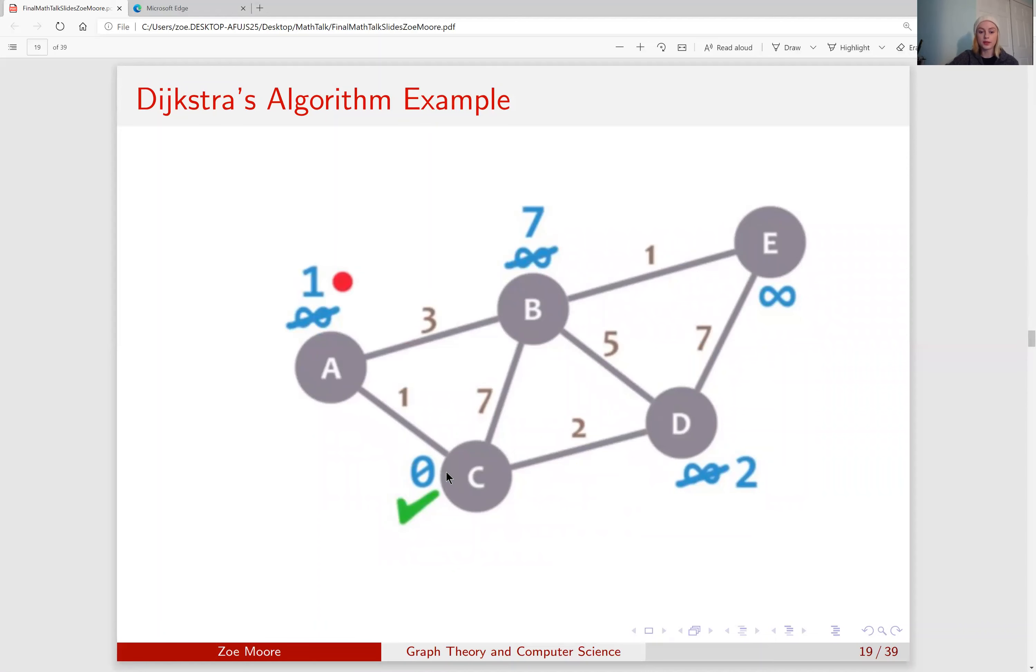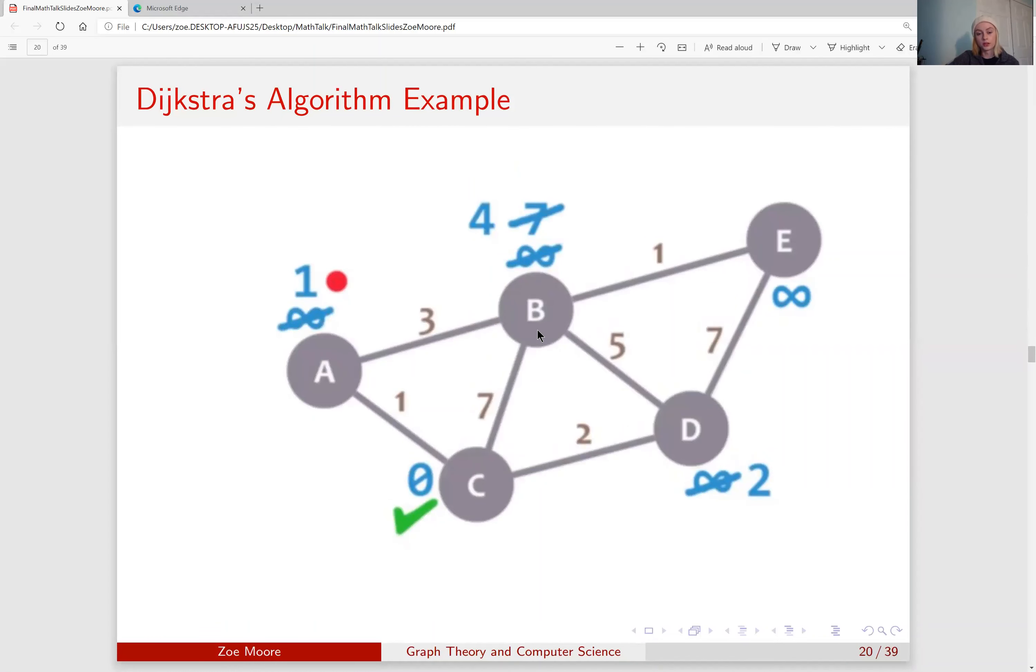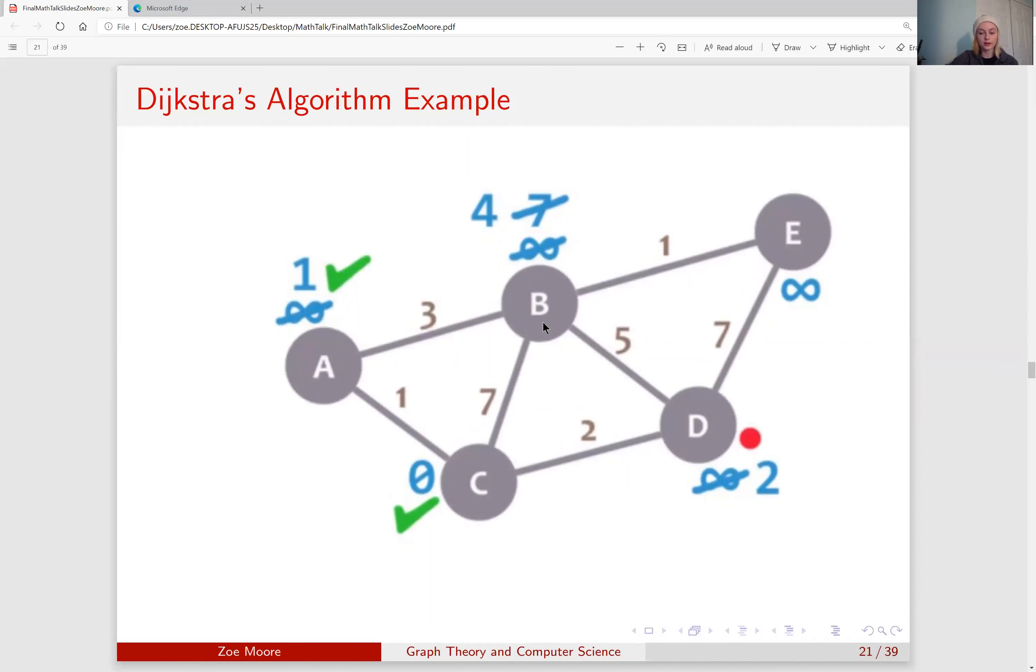Looking now at A, we've gone from A to C and C is complete and checked off, so the only option we have is to look at A to B. Now B currently has a label of 7, but we want to check it anyway. A to B has a weight of 3, and A already has a weight of 1, so moving from A to B gives B a new weight of 4. 4 is less than 7, so we change the label on B because 4 is smaller, and with this changed we are now done with A and we move on to D because 2 as the label is the next smallest in our set.